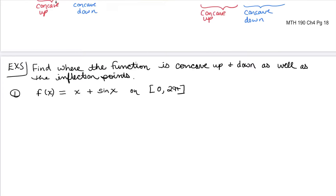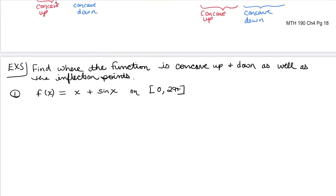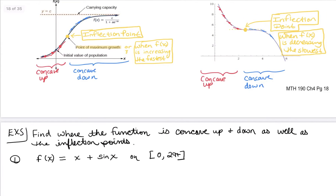We are going to continue here and look at some algebraic examples of concavity and inflection points. Last time we developed the concepts and looked at some graphical examples. We're going to start with f(x) = x + sin(x) on the interval from 0 to 2π. I'm always saying throughout any of these problems — increasing, decreasing, concavity — it is really useful to identify any restricted domains before you get started. We don't have any here: x is defined everywhere, sine of x is defined for all real numbers.